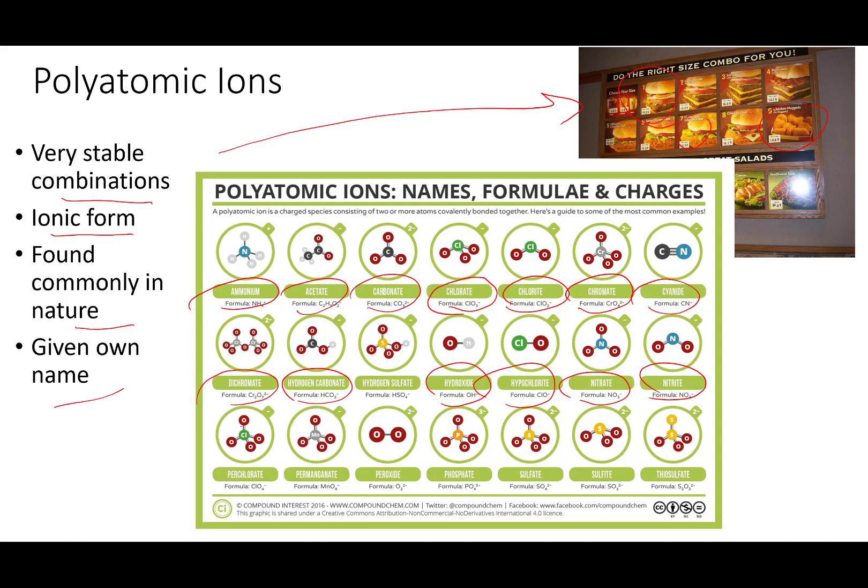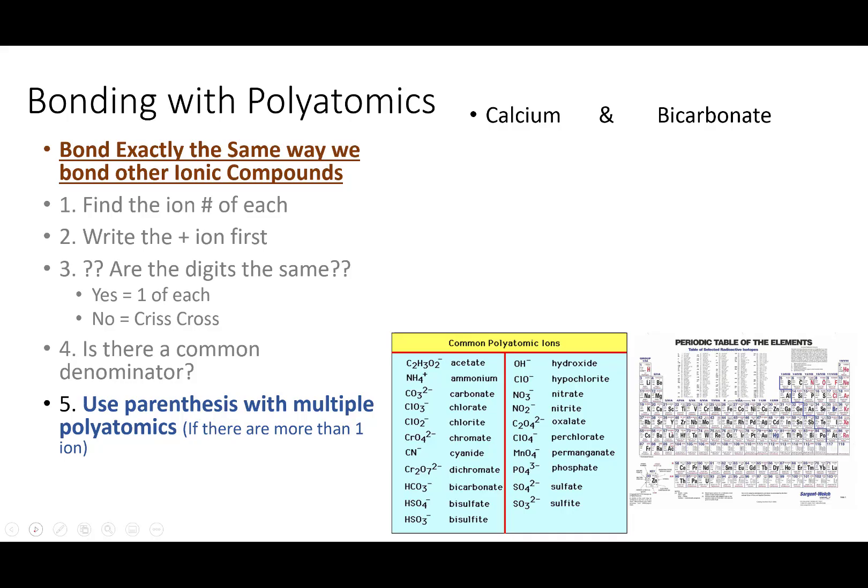The thing is, these combos all have a net charge. Positive 1, positive 2, negative 1, negative 2, or 3, that makes them ions.